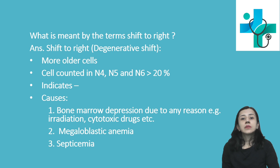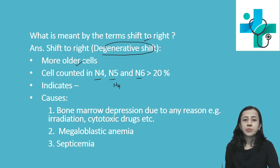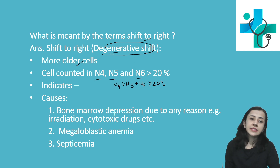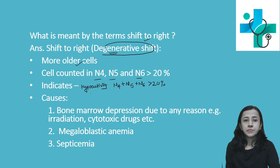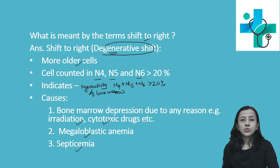Shift to right is also known as degenerative shift. Here, the number of older cells increases. When the cumulative count of N4, N5, and N6 is more than 20%, there is a shift to right or degenerative shift, indicating hypoactivity of the bone marrow — bone marrow activity decreases. Common causes include bone marrow depression due to irradiation or cytotoxic drugs, megaloblastic anemia, and septicemia.